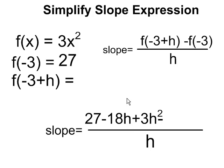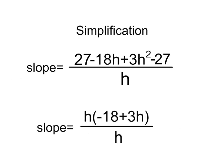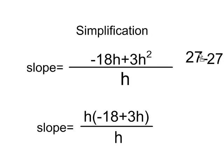And it's going to look exactly like this. I can do some further simplification because I know that 27 take away 27 is 0. So I can get rid of those. I can also factor an h out of both of these expressions like that.